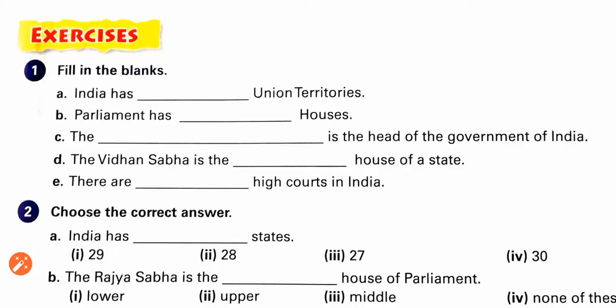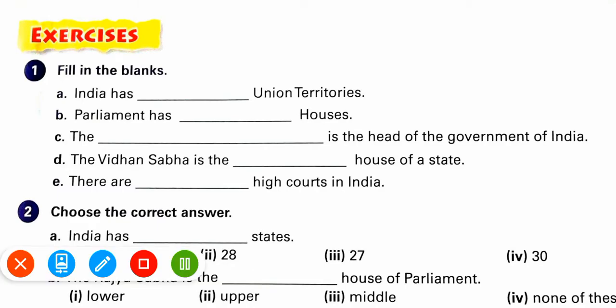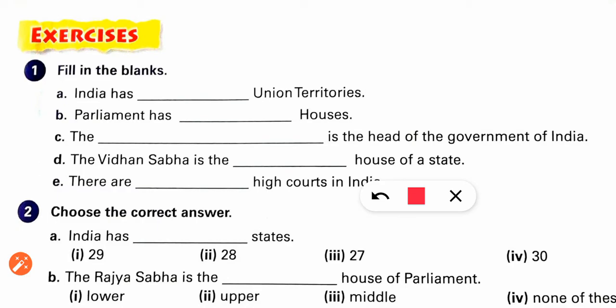Today we will discuss Chapter 19, The Indian Government — exercises only, no question-answer in this video. First, fill in the blanks: India has how many union territories? If we talk about the current year, that is 2020, India has eight union territories.